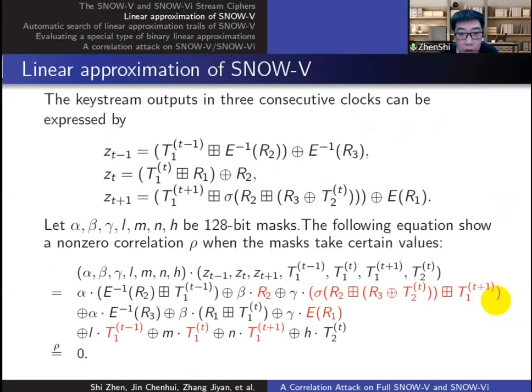The core step is to compute the correlation of the distinguisher. We expand it and get the equivalent linear approximation equation and observe that the black variables can be generated by the red ones because there is a one-to-one mapping between the red variables and the memories R1, R2, R3, and the three LFSR types. So it is easy to get the function that can generate the black variables using the red ones, and the correlation of the equation is exactly the Walsh spectrum of this function.